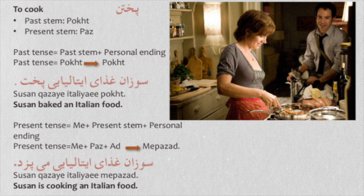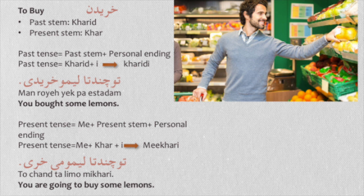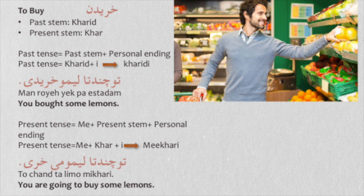The fourth verb is khariidan — to buy. For the past tense, conjugated for you (singular), you need 'e' at the end of the past stem: 'khariidi' means you bought. To chanta limu khariidi — you bought some lemons. For the present tense, you need 'me' plus present stem 'khar' plus 'i': mi kharii. To chanta limu mi kharii — you are going to buy some lemons.